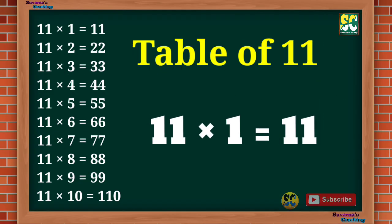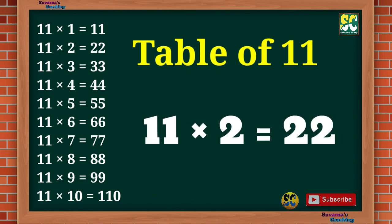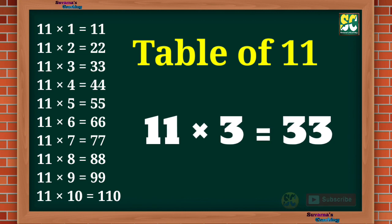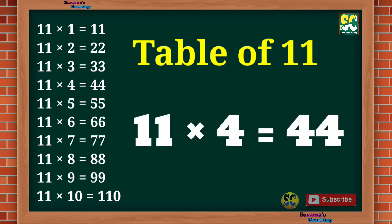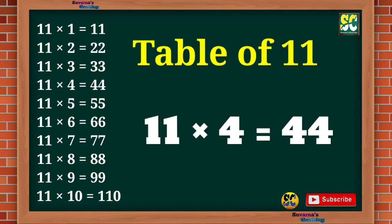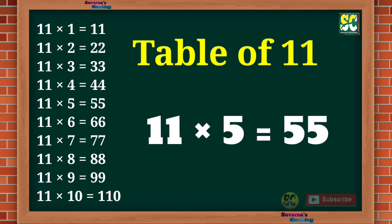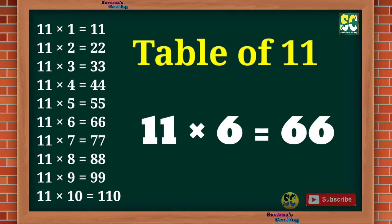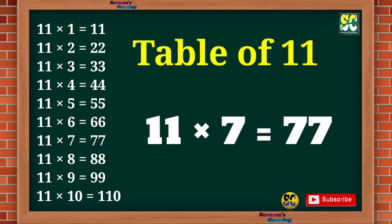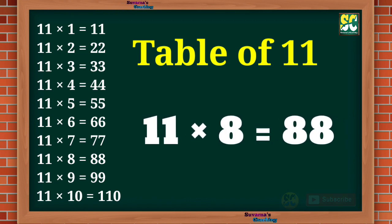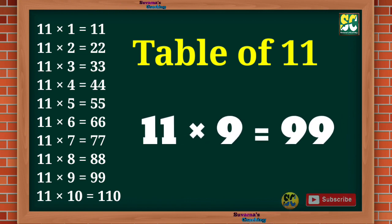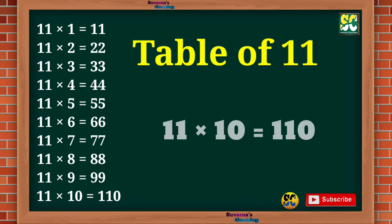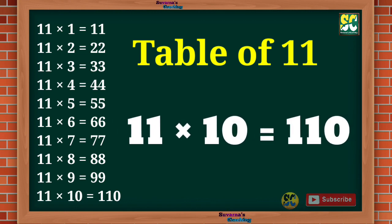Table of 11. 11 1s are 11, 11 2s are 22, 11 3s are 33, 11 4s are 44, 11 5s are 55, 11 6s are 66, 11 7s are 77, 11 8s are 88, 11 9s are 99, 11 10s are 110.